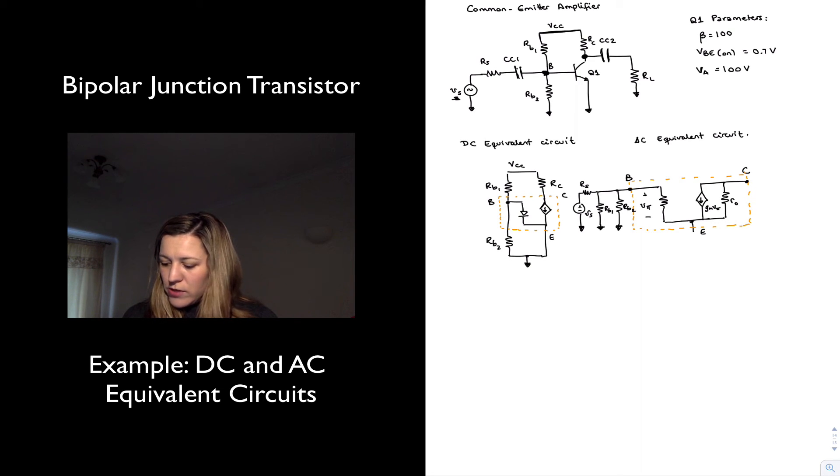And so then I will have my RS and my small signal Vs. I kind of run into my DC circuit there. And then on the other side, I have RC, which is connected to ground, because again, it's connected to a DC source, which is AC ground. Then my capacitor, I'm going to assume, is a short circuit for AC signals in the mid-band region. And I'll have my RL resistor. So this will be my AC equivalent circuit.